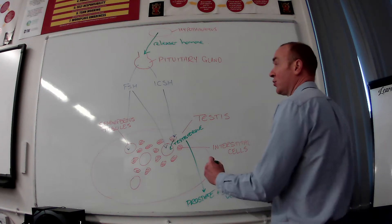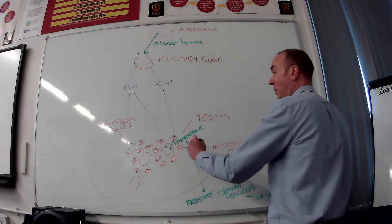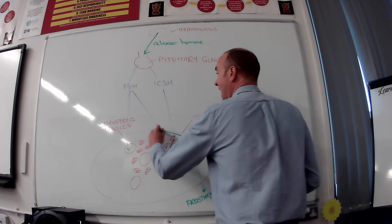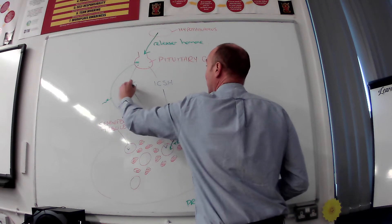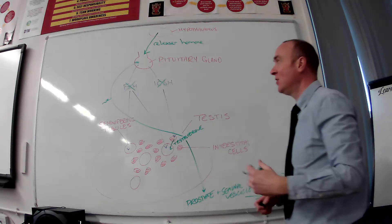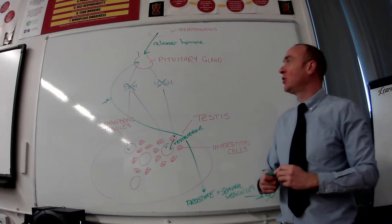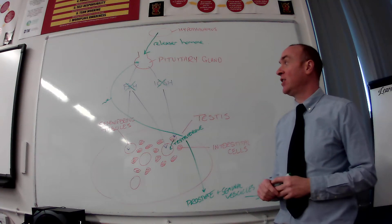And the third thing that testosterone does, as you probably remember or hopefully remember, has a negative feedback effect on the pituitary gland. So actually it starts to stop or begins to reduce the amount of FSH and ICSH that's released.